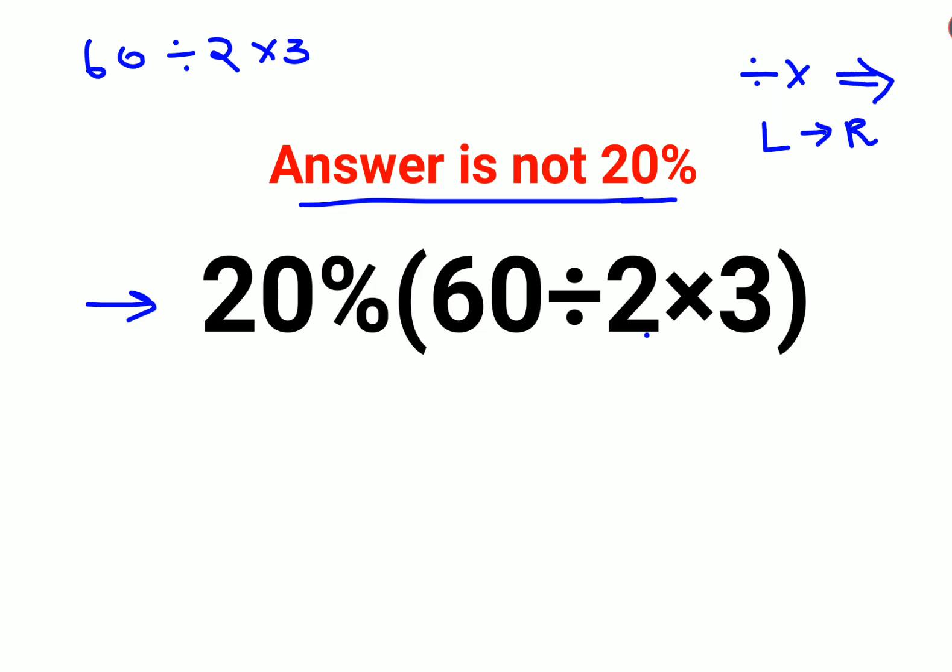So here, 60 divided by 2 gets you 30, into 3 that gets you 90.